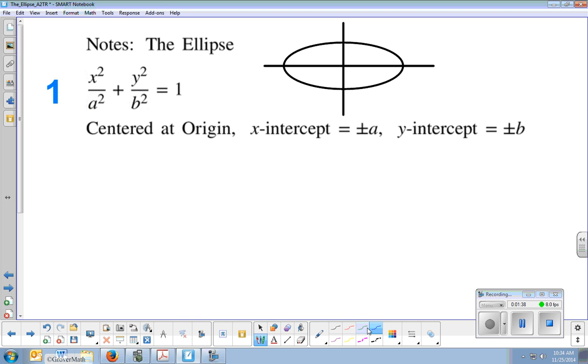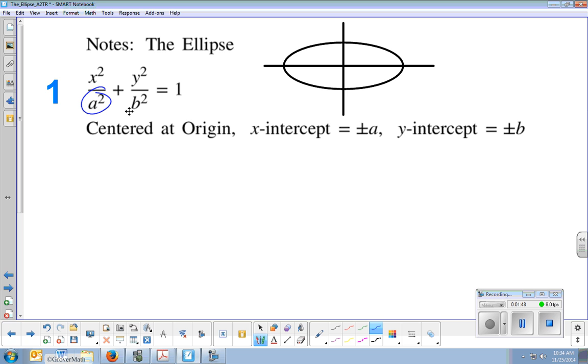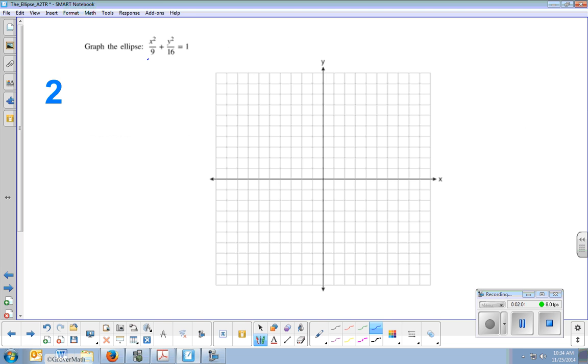is the number below x squared. So whatever's below x squared, we call a squared. In this first example, the number below x squared is 9. The square root of that is a. So our x-intercepts are plus or minus the square root of the number below x squared. So for this first example, this 9 means a squared equals 9 means that a equals plus or minus 3, and these are our x-intercepts.